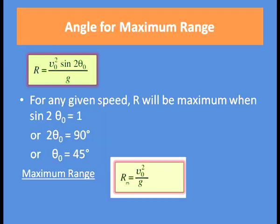You can now determine the angle at which a discus, hammer, or javelin should be thrown to cover maximum horizontal distance. We can find the angle for which the range will be maximum. Since R = V0² sin 2θ₀ / g, for any given speed V0 is constant, and R will be maximum when sin 2θ₀ is maximum, equal to 1.